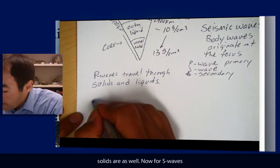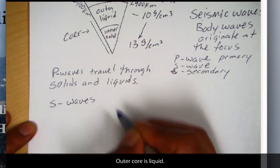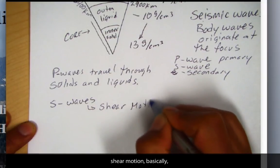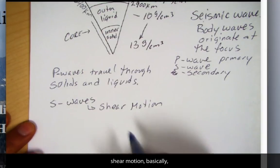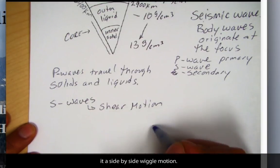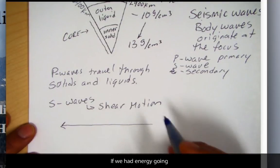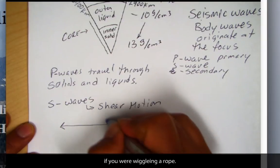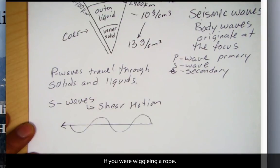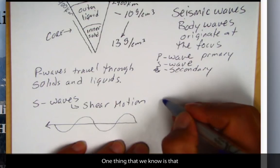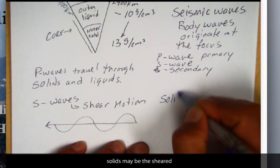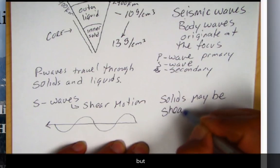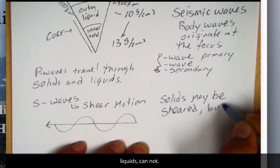Now for S waves, one thing that S waves do, they have a shear, a shear motion. And this shear motion basically is sort of a side-by-side wiggling motion. So if we had energy going in this direction, the particles would wiggle like if you're wiggling a rope. And one thing that we know is that solids may be sheared. But liquids cannot.